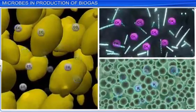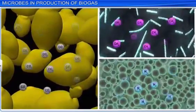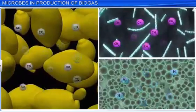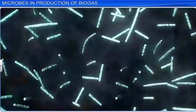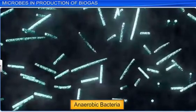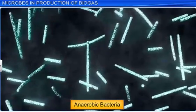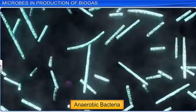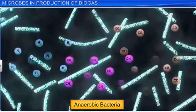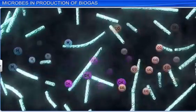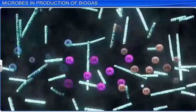Even so, different microbes produce different gases, depending on the organic substrates they utilize. For example, anaerobic bacteria that grow on organic matter, such as cellulose, produce copious amounts of methane, along with carbon dioxide and hydrogen gases. Due to this reason, these bacteria are collectively known as methanogens.